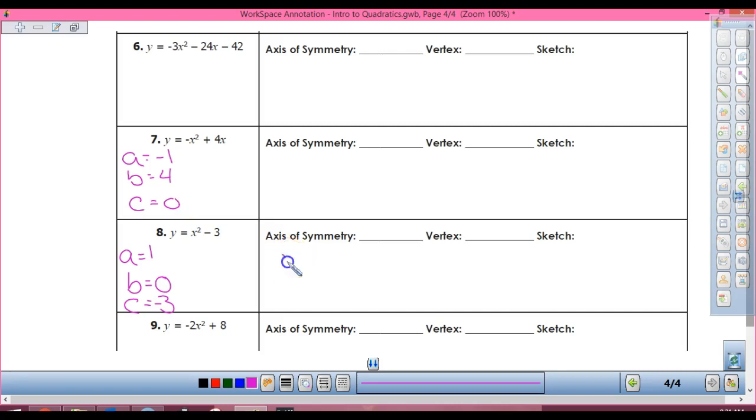Alright? Let's do 8. Axis of symmetry: x equals opposite of B, 0, divided by 2 times positive 1. It's just A. And A is a positive 1. So, my axis of symmetry is x equals 0. My vertex: Y equals - what's here? 0. 0 squared minus 3. What's 0 squared? 0. Minus 3. 0, negative 3.